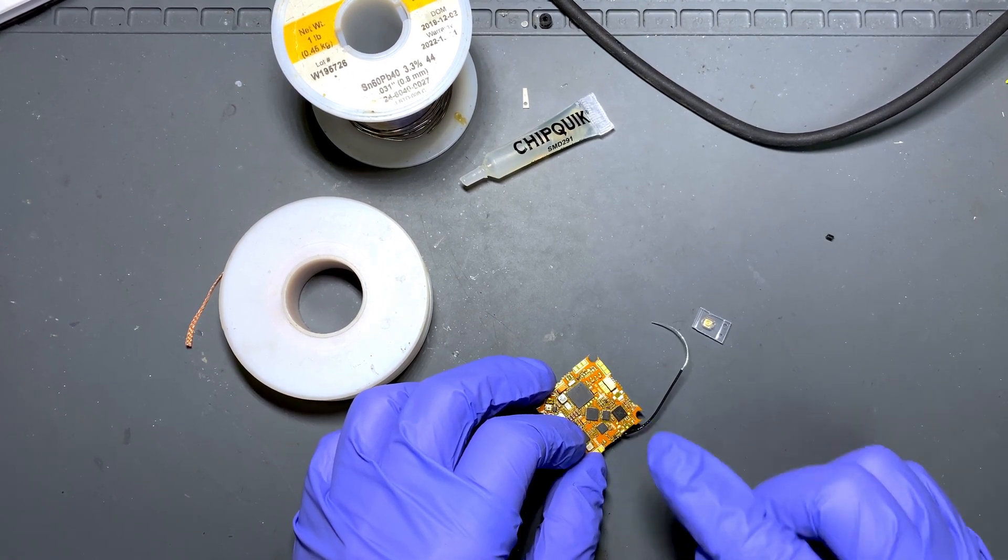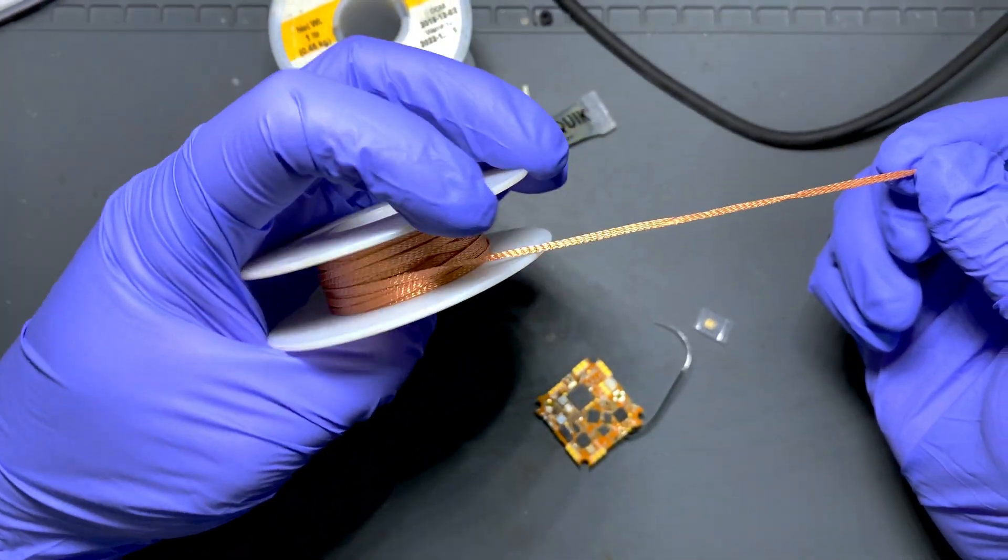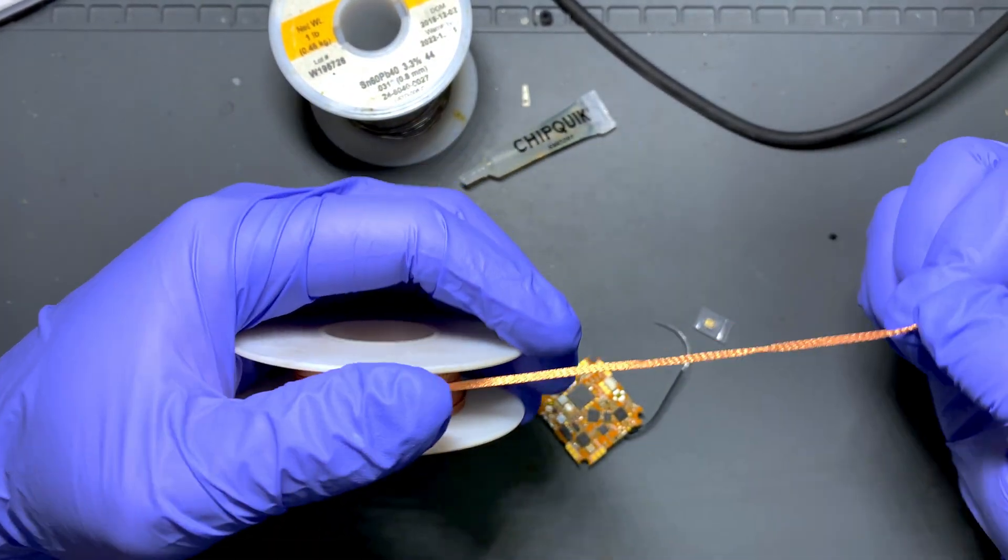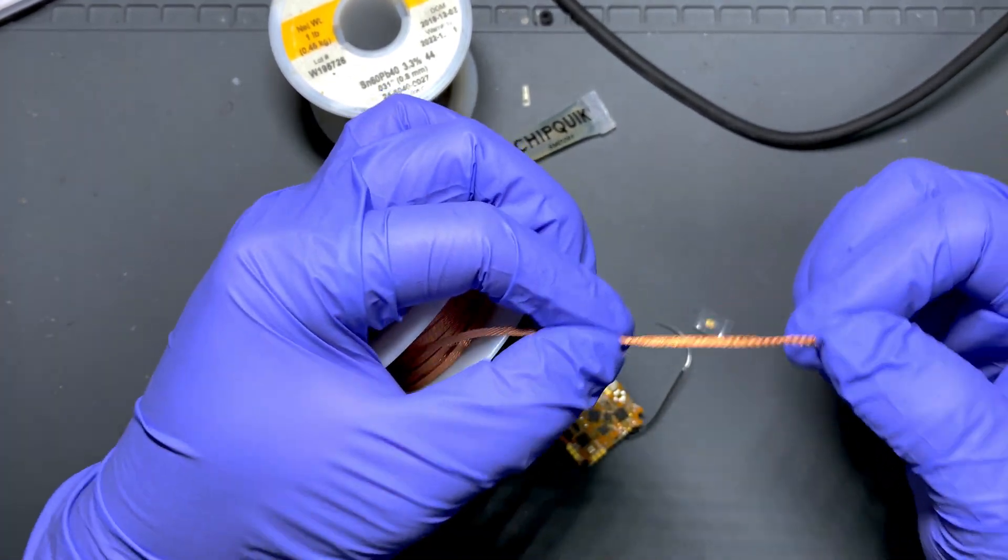First of the things you want to clean it up, so you will need solder wicks. You can pick up this from Amazon or some local electronic shops.